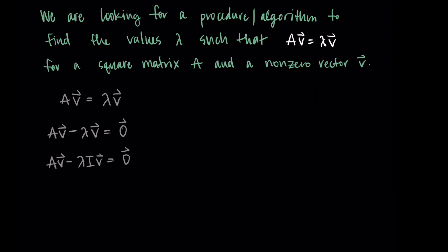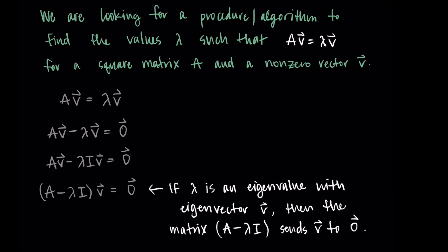We do this so that each term has a matrix in it — A in the first term and the identity I in the second. Now we factor out our vector V, giving us: A minus lambda times the identity, that entire quantity, multiplied by V equals zero. So A minus lambda I is a matrix, and we're saying this new matrix sends V to the zero vector. We started by looking at matrix transformation A, and now we're looking at A minus lambda I, which sends vector V to zero.